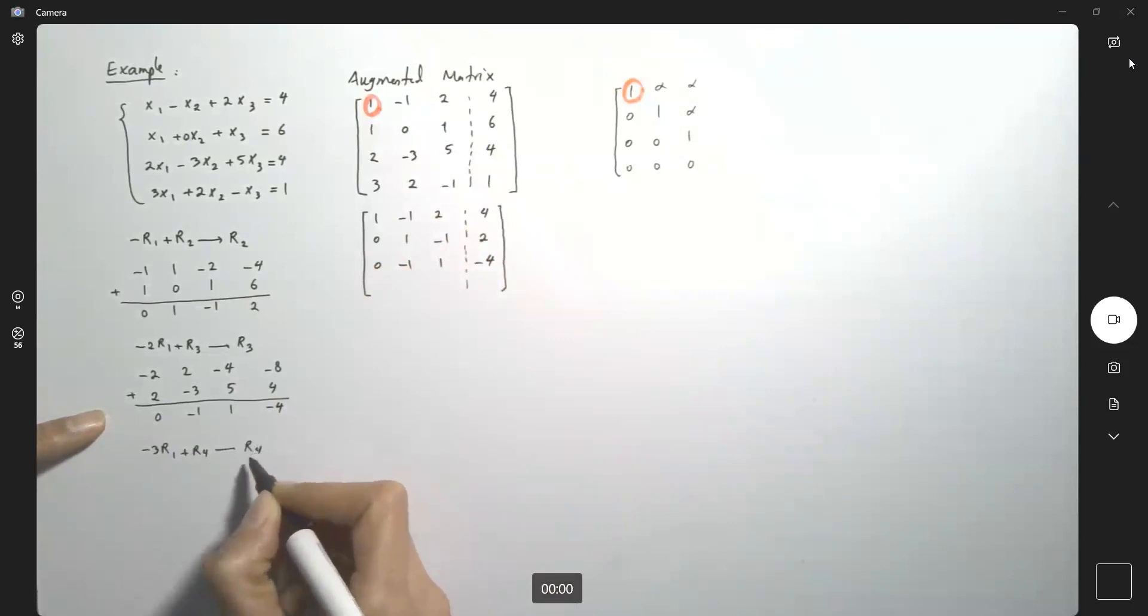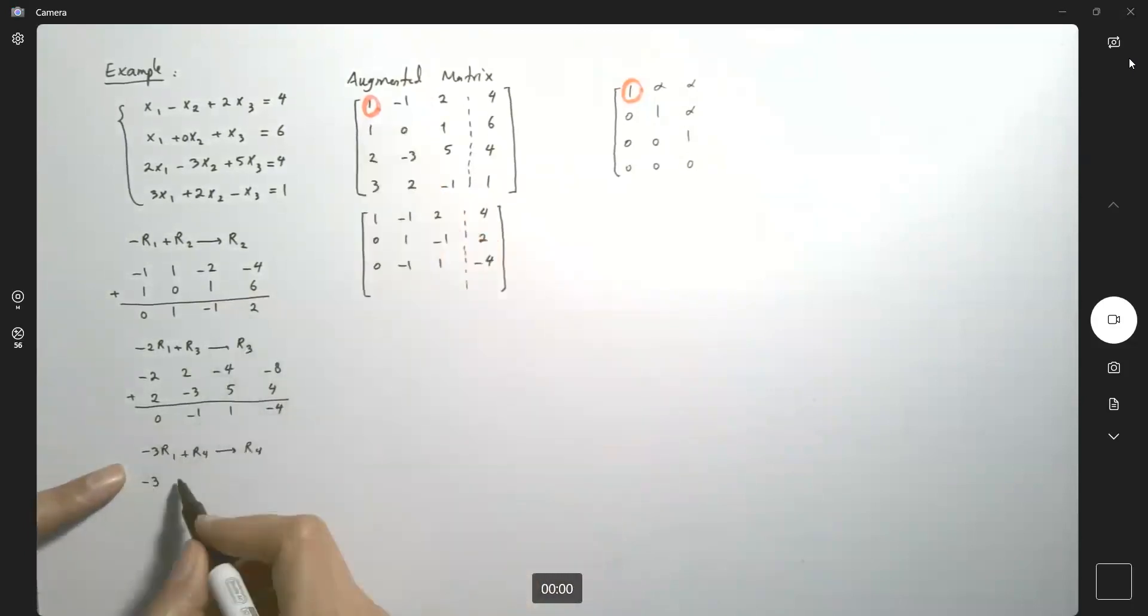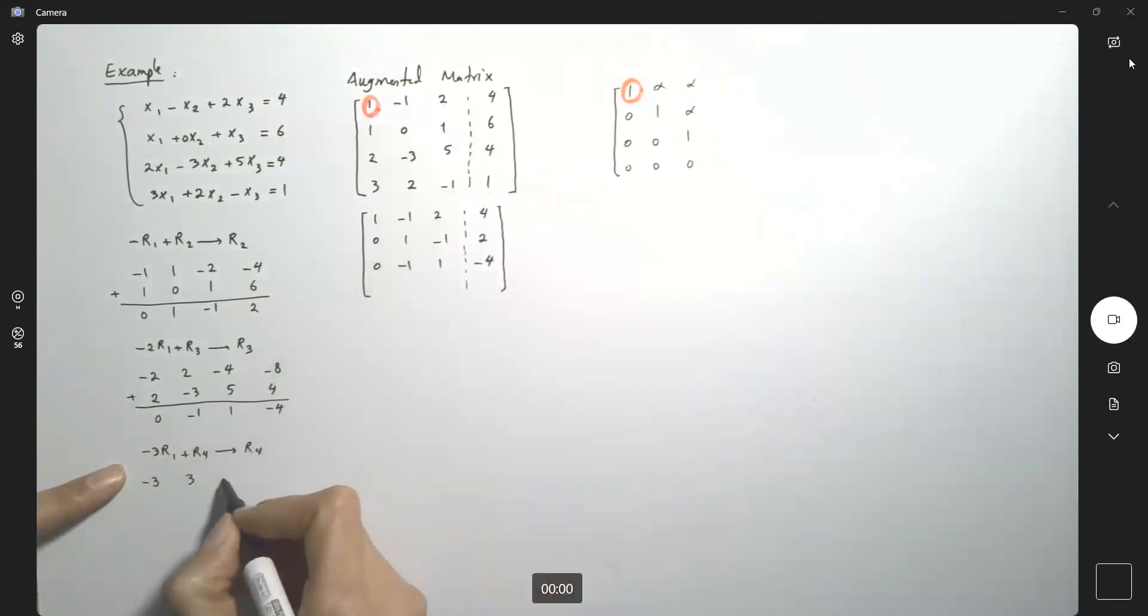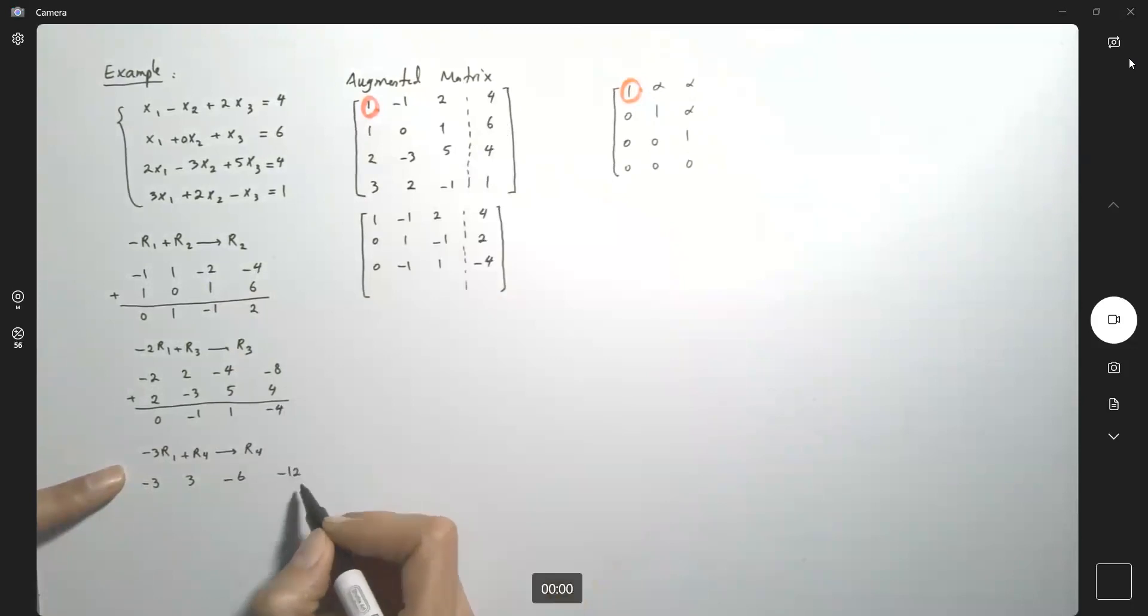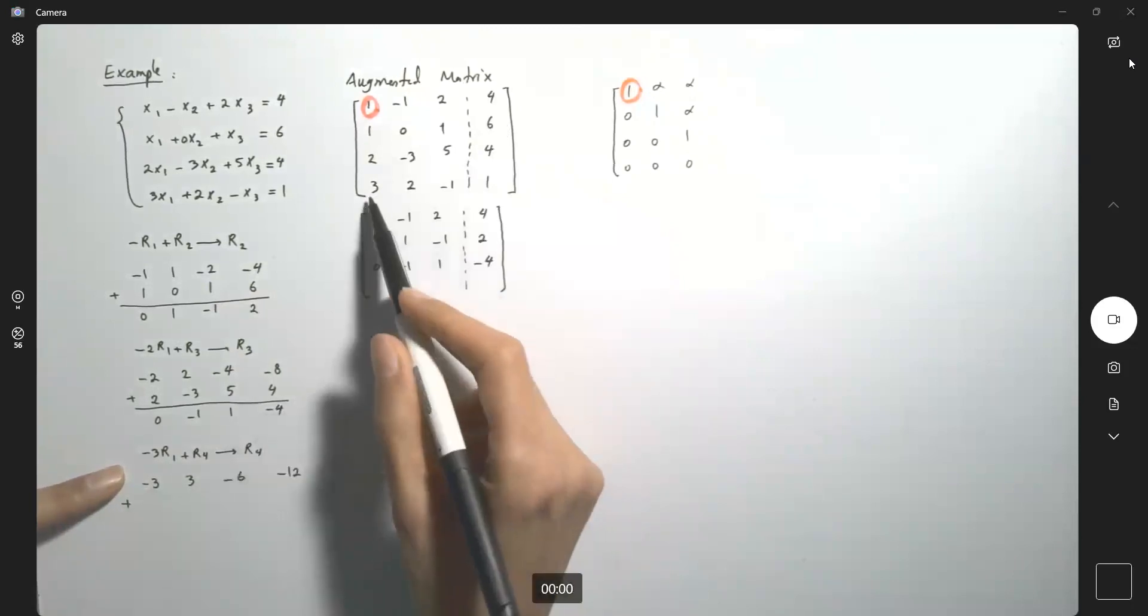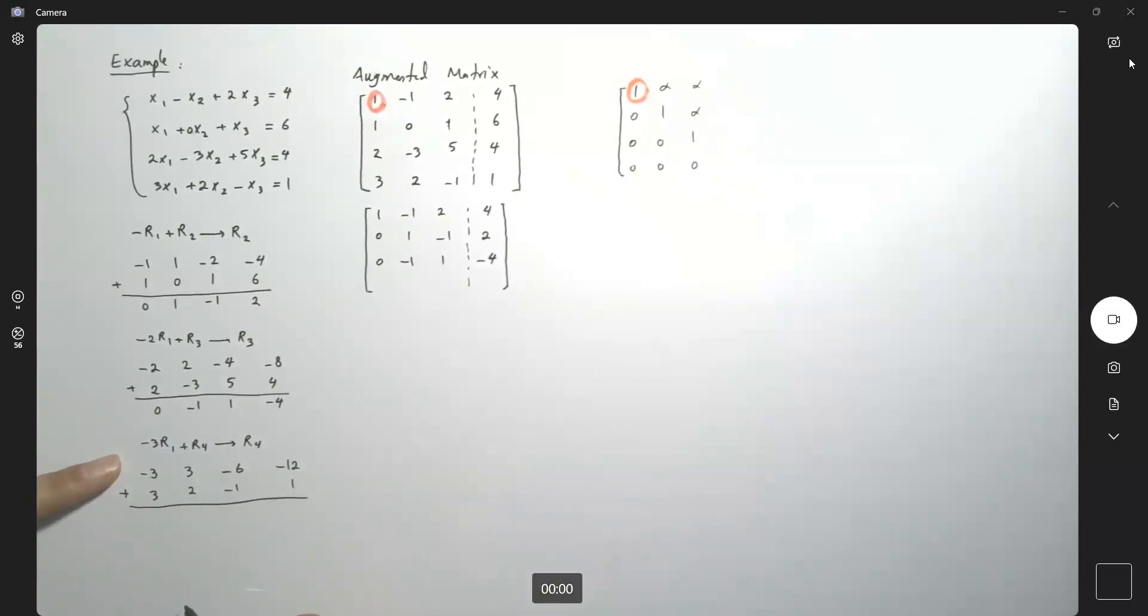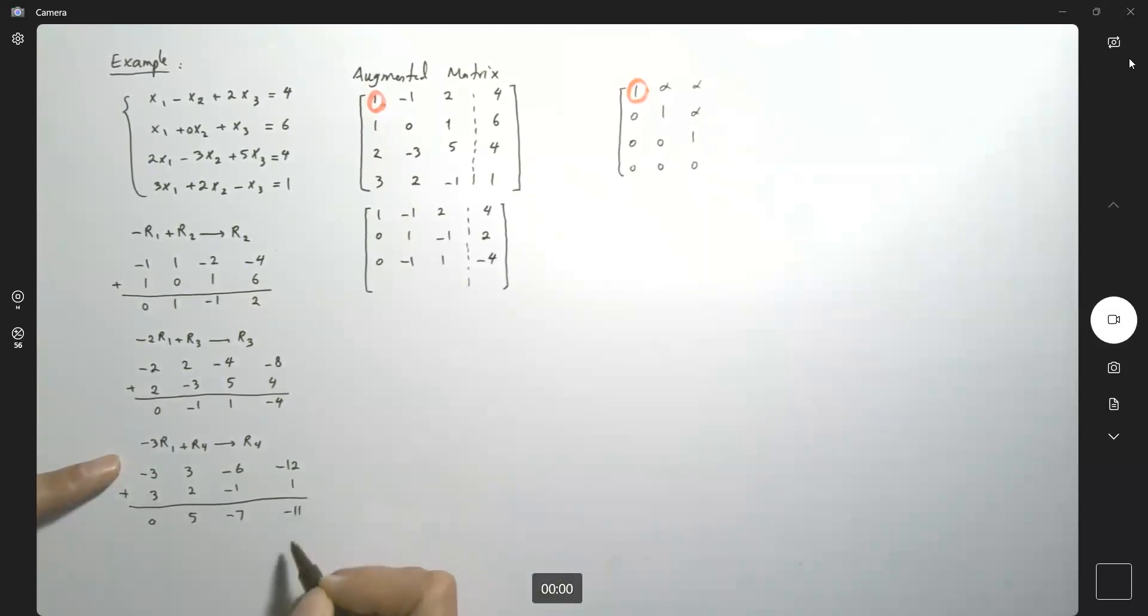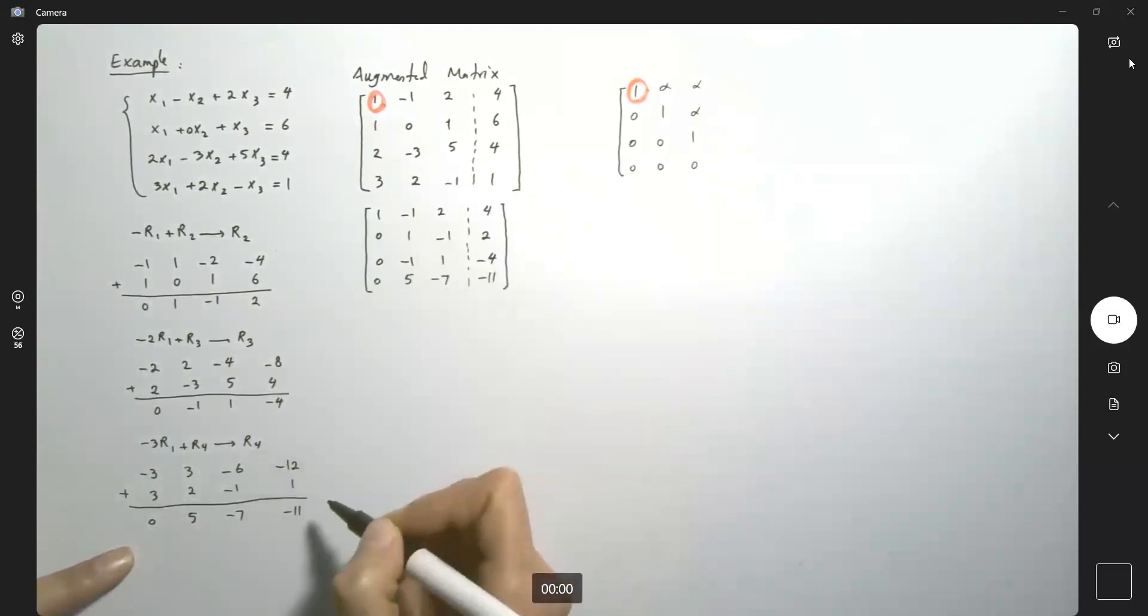And this new row is replaced by r4. So I have negative three and then I have a three and then I have negative three times two, which is negative six and negative three times four, which is negative 12 plus r4. r4 is three, two, negative one, and one. So let's take a look at this new row here. Zero, five, negative seven, and negative 11.